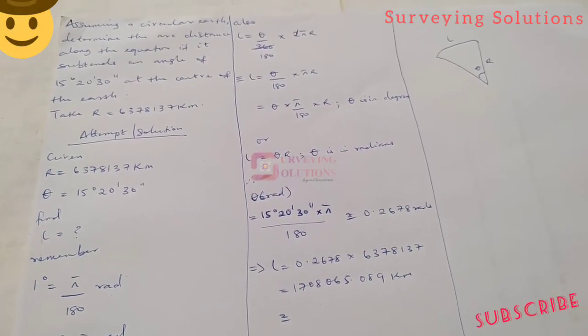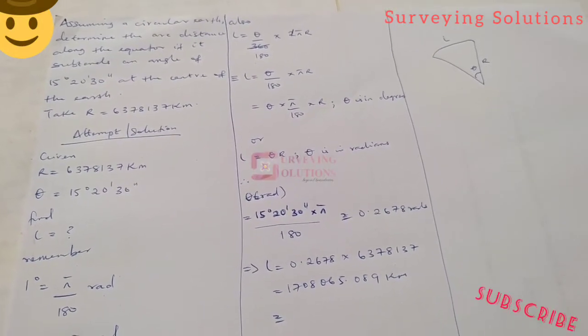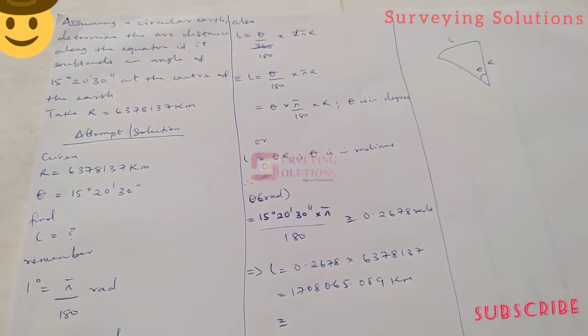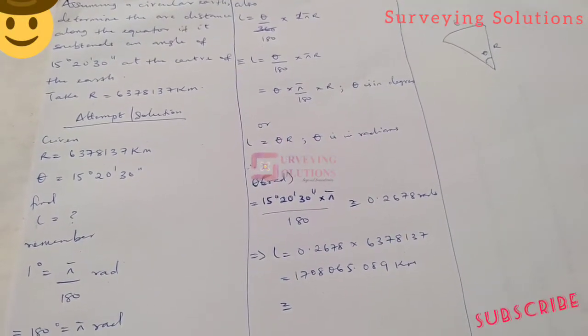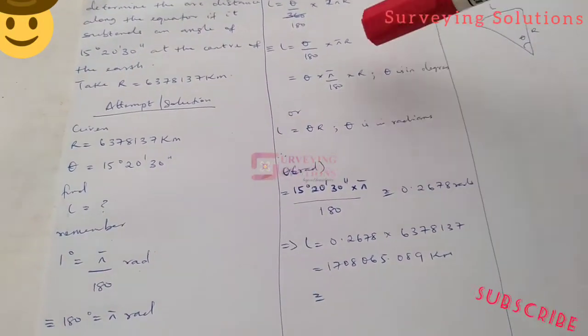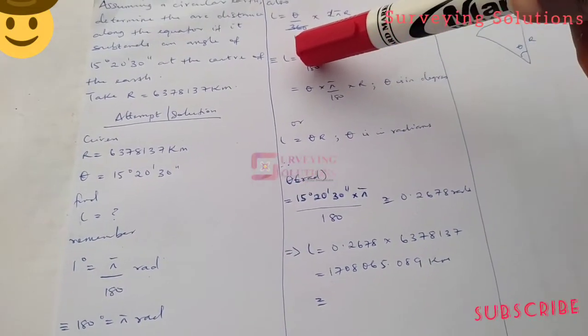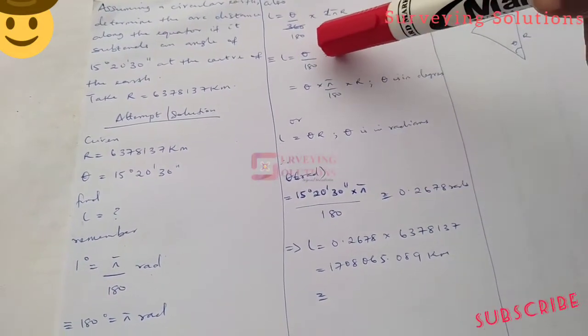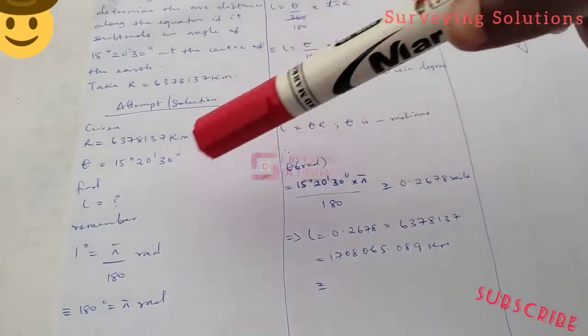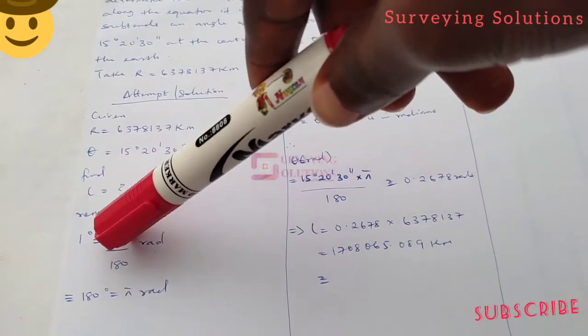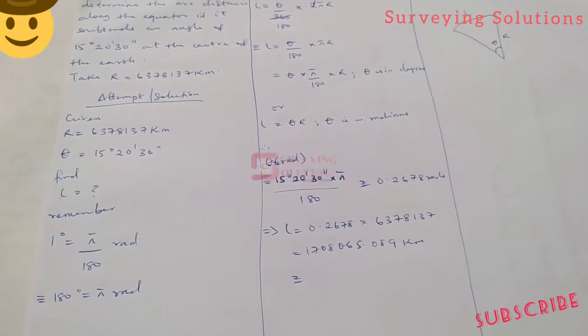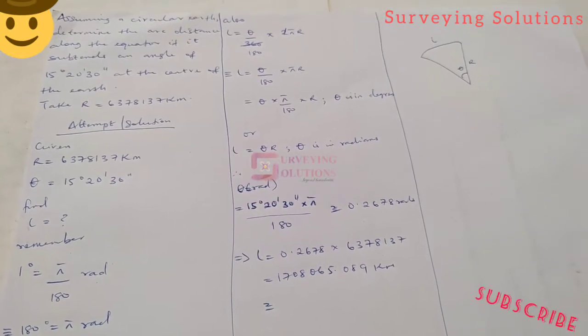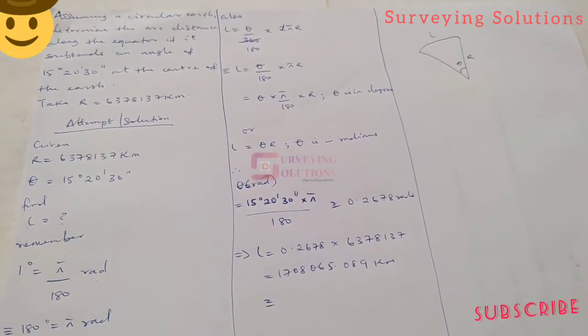L equals the angle over 180 times πr. We can rewrite that as θ times π over 180 times the radius. The θ there is actually in degrees.